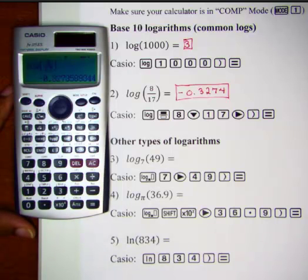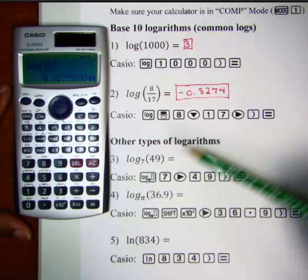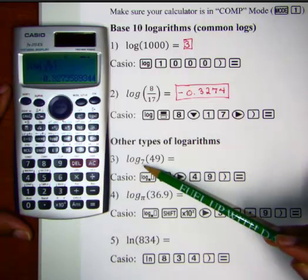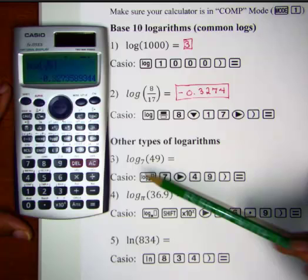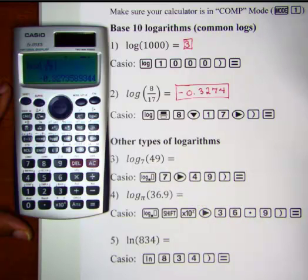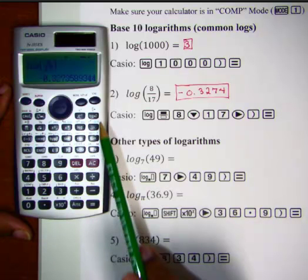Now, all logarithms are not base 10 logarithms. So let's take a look at some of those. Problem number 3 reads log base 7 of 49. In other words, 7 raised to what power gives us 49? Well, this is obviously not a base 10 log because we see that the base is the number 7. So the Casio has a special logarithm key for those types of logarithms and that key is located here.